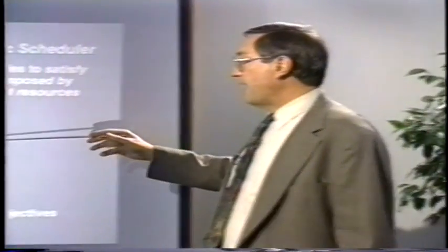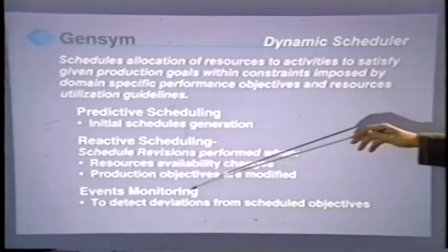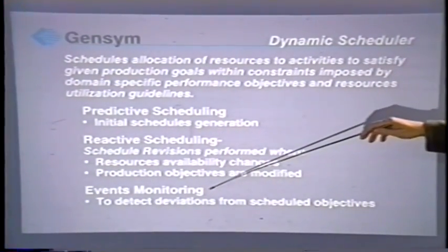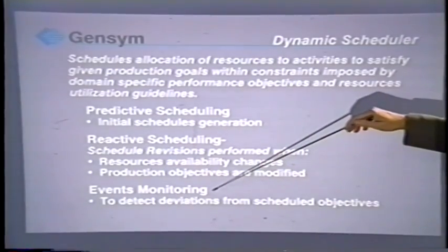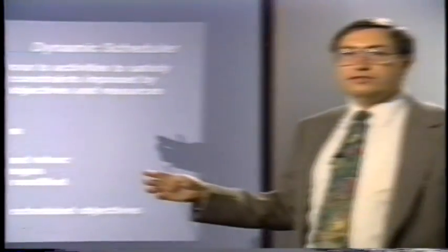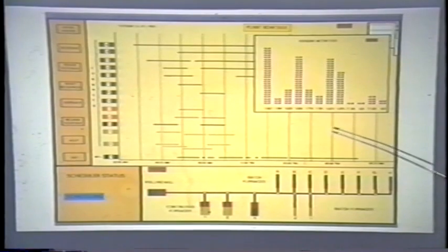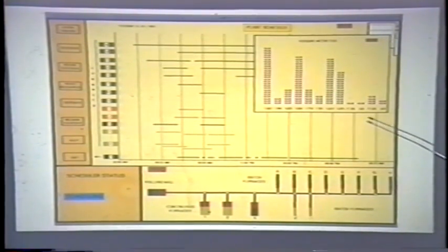The system can react to resource changes or objective changes. And because it's built on G2, you can monitor actual production and compare it automatically to the schedule. The next few slides are actual screenshots showing the flavor of G2 in this particular dynamic scheduling application — a rolling mill application online at Carpenter Technology, one of the largest specialty steel manufacturers in the United States.